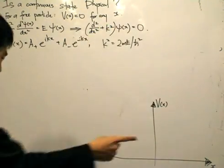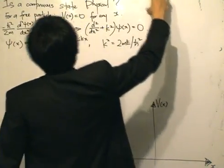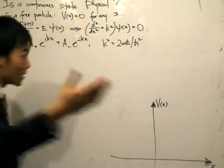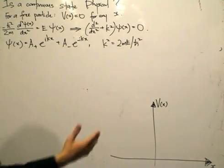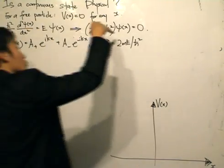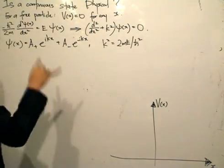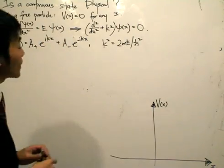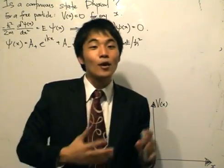The sole question we're going to answer today is: is a continuous state physical? A continuous state corresponds to the solutions of the free particle. For a free particle, the potential equals zero for any x. We solve the time-independent Schrödinger equation and it can be written in a form where k is the wave number, k-squared is positive, and the solutions are given as a linear combination of e^(ikx) and e^(-ikx). Since it's a free particle, there are no boundary conditions.